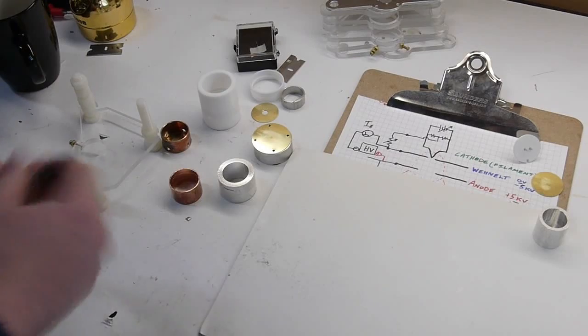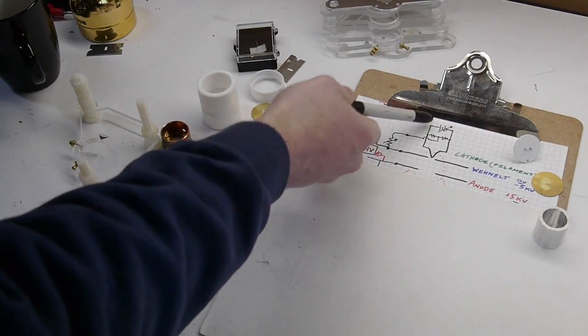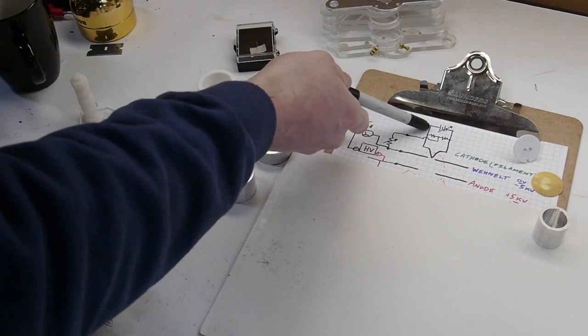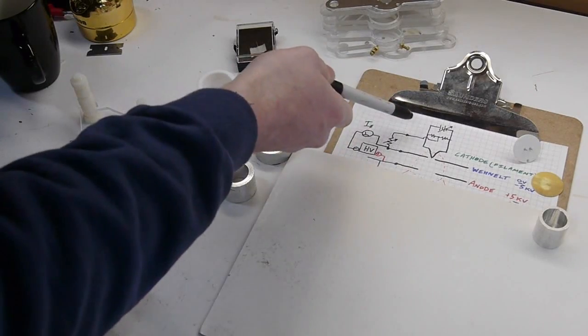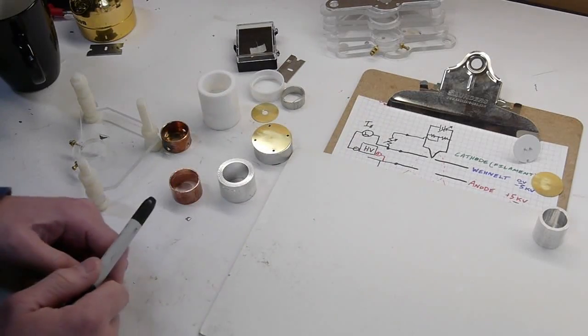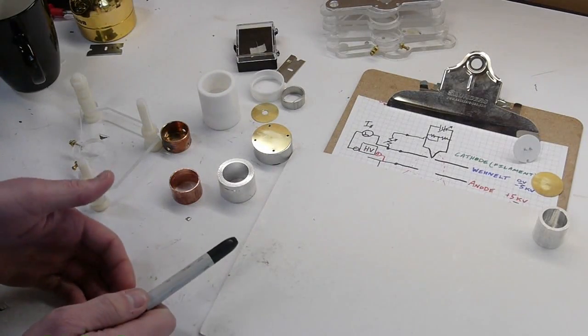So the filament is heated up by a DC power supply, which I'm representing with a battery with an arrow through it. There's nothing special about heating up a filament with DC power. It's just convenient. If there were some other magic way to make the filament hot, that would work too.